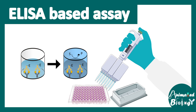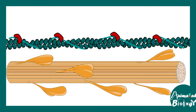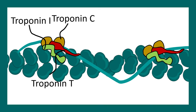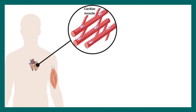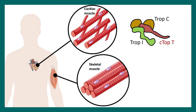So what is TROP-T and how does the test actually work? In our muscles there are actin, myosin, and troponin. In the diagram, you can see the troponin molecules highlighted in red. If you zoom in, you would see there are three types of troponins: Troponin I, Troponin C, and Troponin T. This Troponin T is abbreviated as TROP-T.